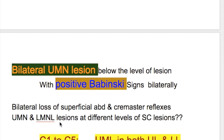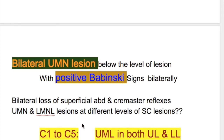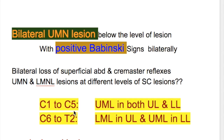What upper motor neuron and lower motor neuron lesions are produced at different levels of spinal cord lesion? From cervical 1 to cervical 5, there is upper motor neuron lesion in both upper limb and lower limb. From cervical 6 to thoracic 2, lower motor neuron lesion is produced in the upper limb and upper motor neuron lesion is produced in the lower limb.